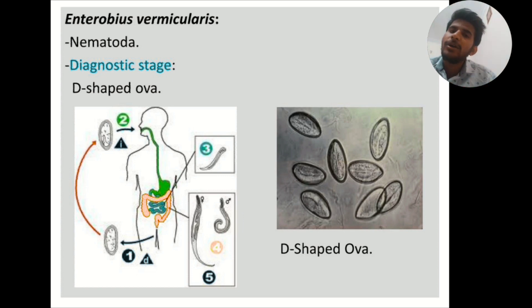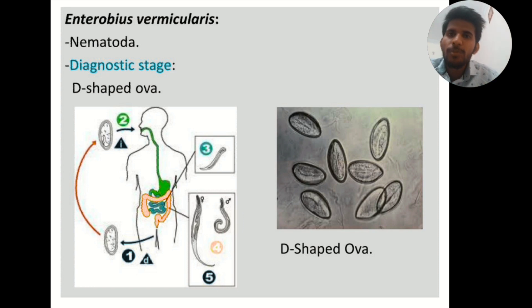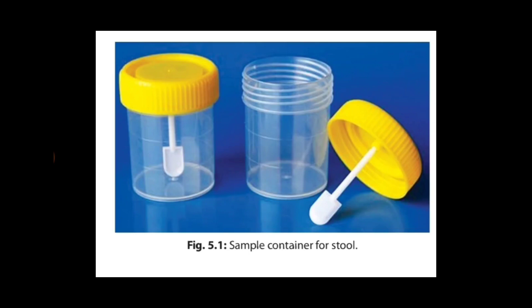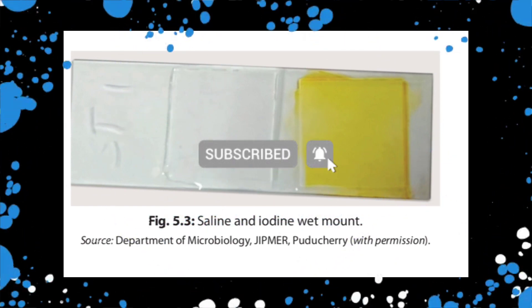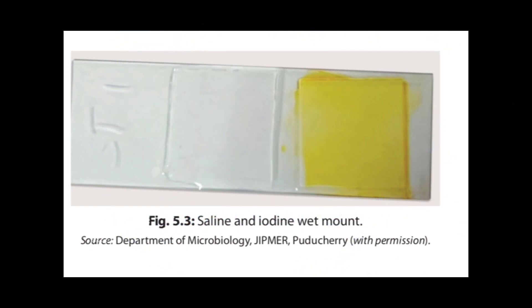Check out the microbiology practical playlist on the Medicomani YouTube channel — there are two more parts coming on stool examination. To collect the stool sample, use a sample container that is dry, sterile, wide-mouthed, with a screw cap, and a sterile stick to collect the sample. You can also see the saline mount and iodine mount preparations placed under the cover slip and examined under the microscope as soon as possible.